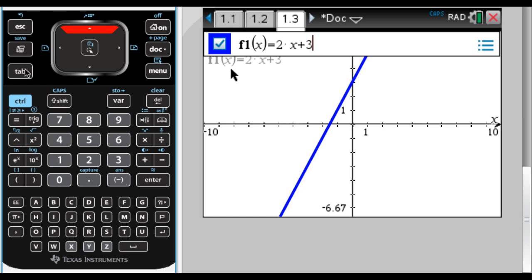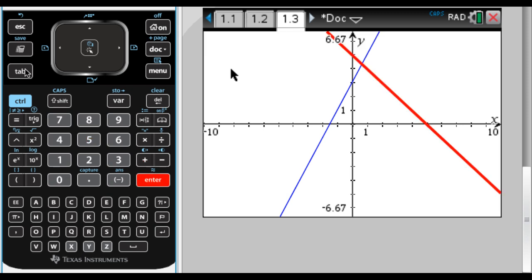So once I've graphed that, let me go ahead and graph a second thing. I'm also going to graph negative x plus 5. And you can see now I have two graphs.